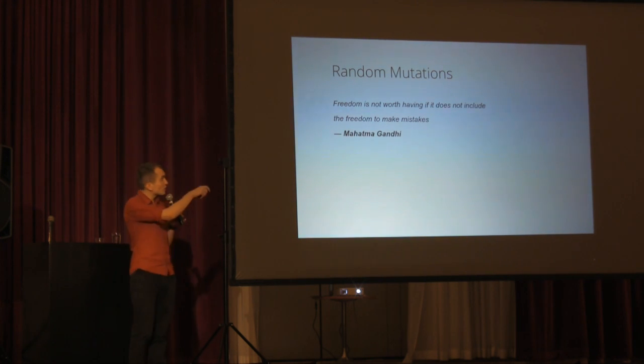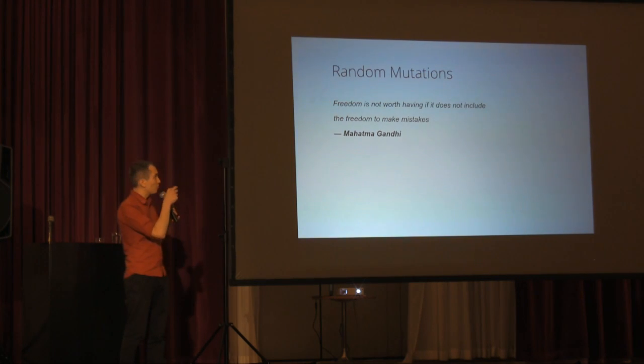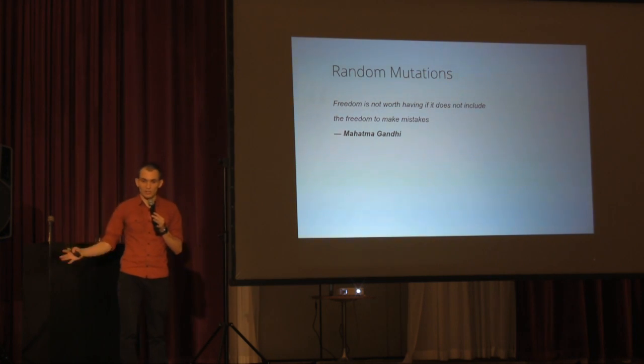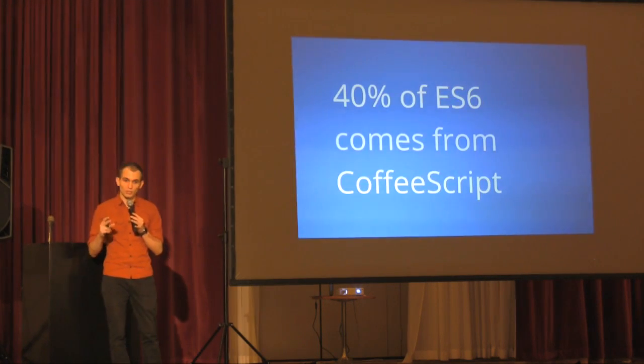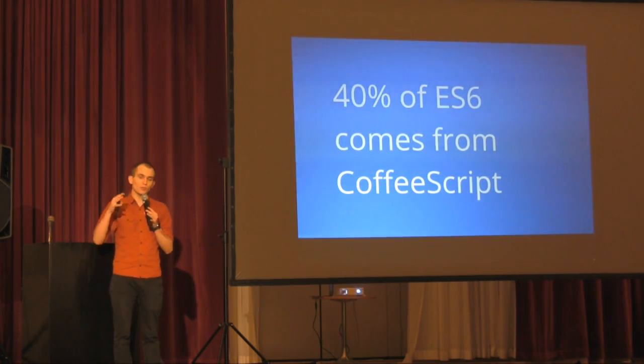Evolution also requires random mutation, and it's very important. Every great revolutionary idea was very crazy at the beginning. What did people think about iPhones when it was released? What did people think about web applications just 15 years ago? What did people think about airplanes 100 years ago? There is only one way to find a revolutionary idea — practice. We need to create any ideas we have and then use practice to choose the better one. This is why preprocessors are so important — preprocessors are a playground for new ideas. We can test crazy new ideas before they become a standard.